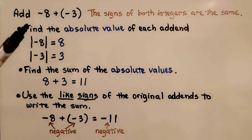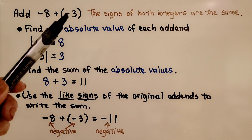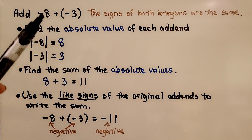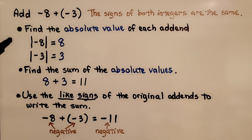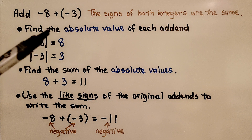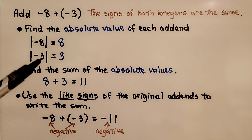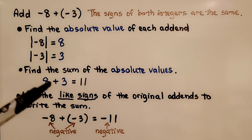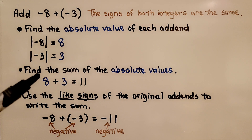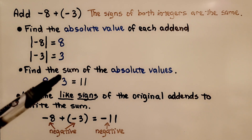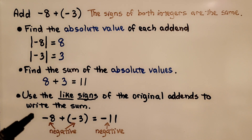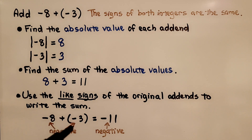Here it's telling us to add negative 8 plus negative 3. The signs of both integers are the same, so we find the absolute value of each addend. The absolute value of negative 8 is 8 — it's 8 jumps from zero. The absolute value of negative 3 is 3 — it's 3 jumps from zero. We find the sum of the absolute values: 8 plus 3 equals 11. Then we use the like signs of the original addends — they were both negative — so our sum is negative 11.